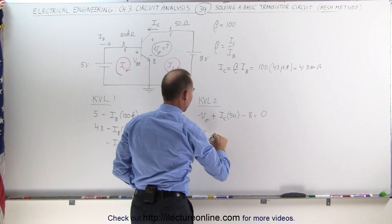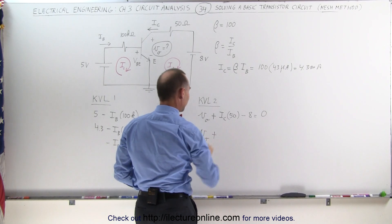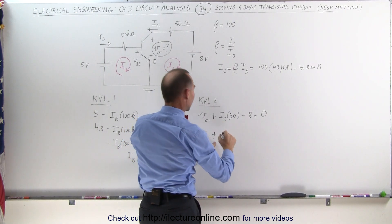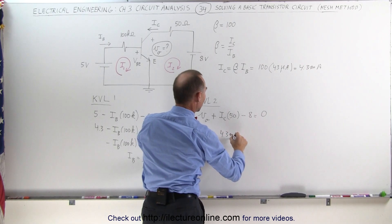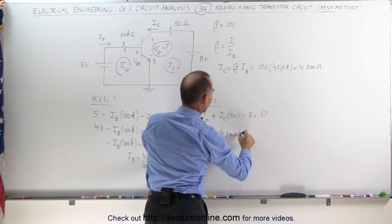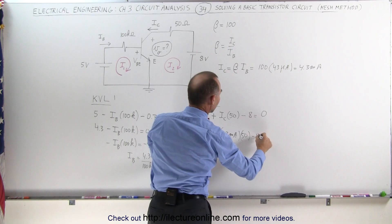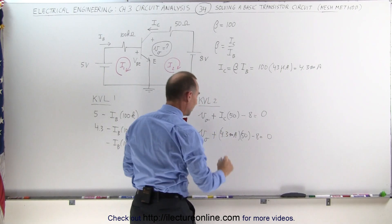So V sub O plus the collector current, which is 4.3 milliamps times 50 minus 8 equals zero. And finally,